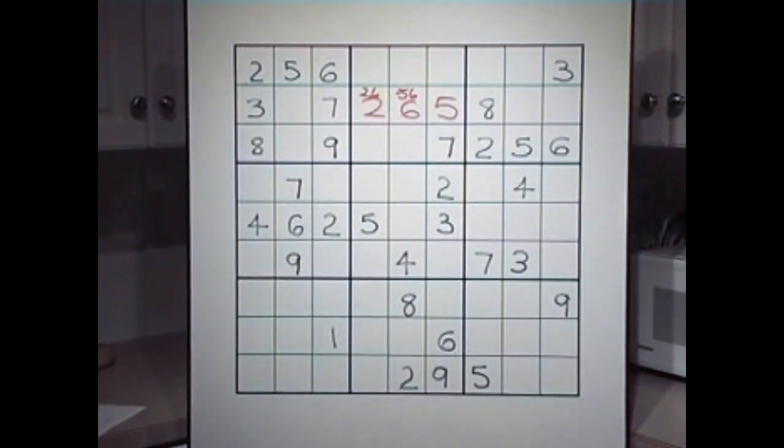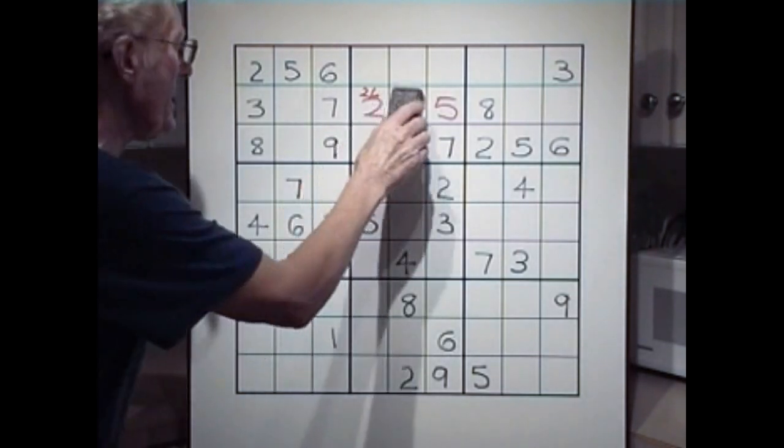So you see how much faster we went using our memory, and not having to worry about rubbing out those little numbers. If you wanted to rub out the little numbers, you could. Okay, now let's go to look at the puzzle again.